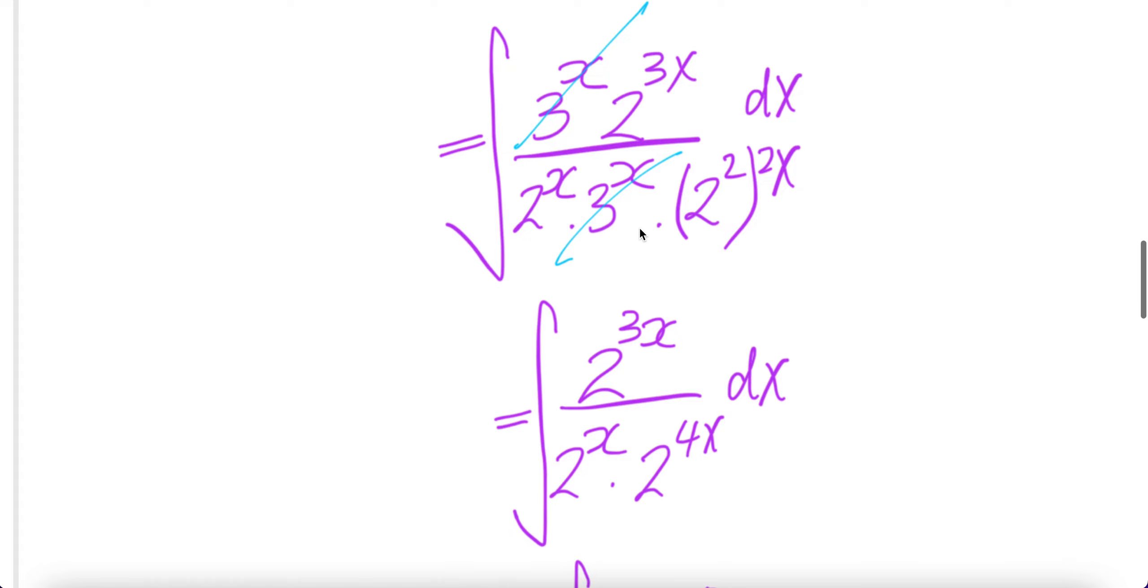3 to the power x cancel, and then you have 2 to the power 3x upstairs. And then here you get 2 to the power 4x, then here 2 to the power x.